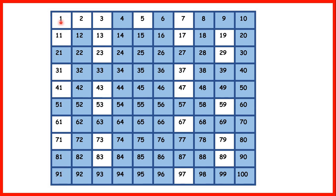Remember, 1 is not a prime number because its only factor is itself — 1 is the only factor of 1. But the numbers we have left in white, the numbers that we haven't shaded, are all prime numbers because they're not in the 2, 3, 5 or 7 times tables. They're not multiples of 2, 3, 5 or 7.